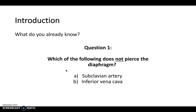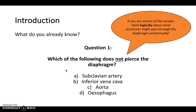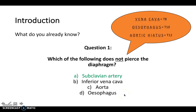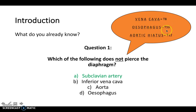Is it the subclavian artery, the inferior vena cava, the aorta, or the esophagus? It's a nice easy question if you understand the anatomical positions. The answer is the subclavian artery. The three structures that pass through the diaphragm are: the vena cava at T8 (8 letters), the esophagus at T10 (10 letters), and the aortic hiatus at T12 — corresponding to the 12 letters in 'aortic hiatus.'